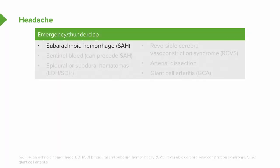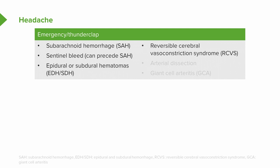In the emergent and thunderclap group of conditions, we think of subarachnoid hemorrhage, sentinel bleed, epidural or subdural hematomas, RCVS — Reversible Cerebral Vasoconstriction Syndrome, which presents with headaches and sometimes focal neurologic deficits — arterial dissection, and giant cell arteritis. These are emergent problems. We need to evaluate and diagnose them quickly so we can manage the patient appropriately.